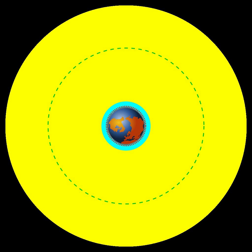Areosynchronous orbit, a synchronous orbit around the planet Mars with an orbital period equal in length to Mars' sidereal day, 24.6229 hours. Aerostationary orbit, a circular areosynchronous orbit on the equatorial plane and about 17,000 kilometers above the surface of Mars. To an observer on Mars this satellite would appear as a fixed point in the sky.